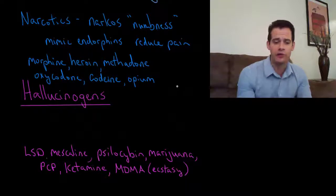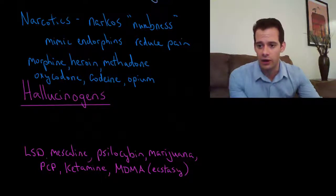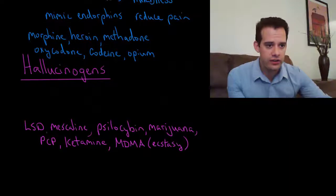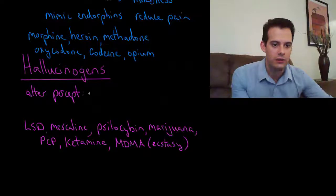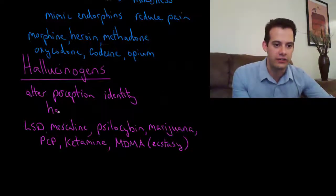Those are narcotics. Now we'll move to the last class of drugs, and these are hallucinogens. Hallucinogens are drugs that are able to alter our perception. They can alter our perception, including our sense of identity, and they can induce hallucinations.